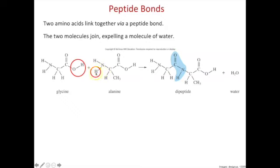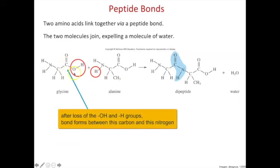That allows for formation of a bond between this carbon of the COOH group on one amino acid to the nitrogen of the NH2 group on the other amino acid. The bond is between a carbon and a nitrogen, and this is called the peptide bond that's formed between two amino acids.